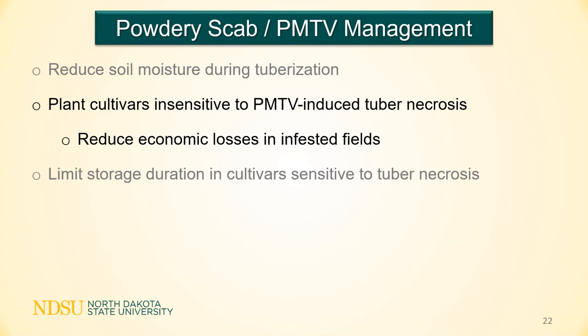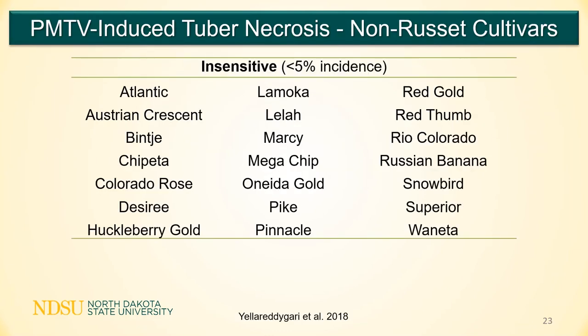Generally, all cultivars are susceptible to infection by PMTV, but they are either sensitive or insensitive to PMTV tuber necrosis. A second management tactic is to plant cultivars insensitive to PMTV-induced tuber necrosis. The pathogen can still spread in these insensitive cultivars, but they will not develop the dark spots, arcs, and rings, so you will not suffer the economic losses. A study was conducted across two years evaluating PMTV-induced tuber necrosis across cultivars from several tuber types — 15 white, 13 red, 6 specialty, and 4 yellow. The table here represents 21 cultivars that were insensitive to PMTV tuber necrosis, meaning less than 5% incidence was observed.